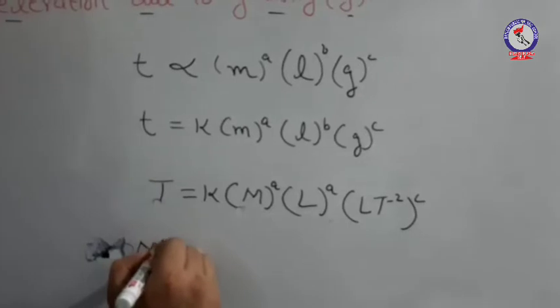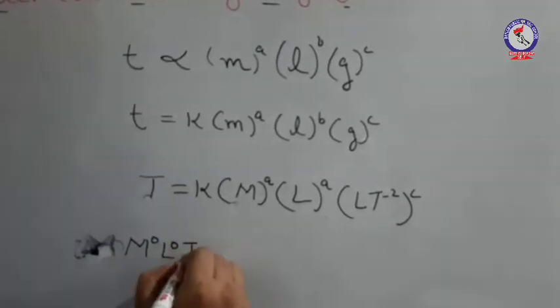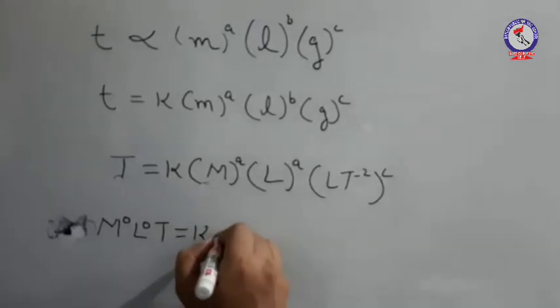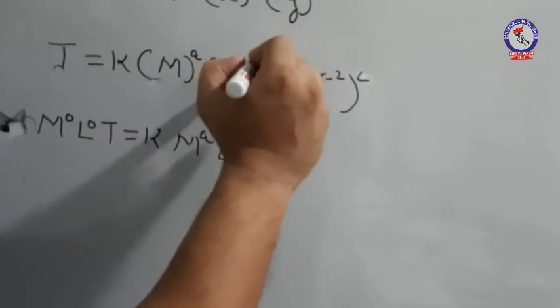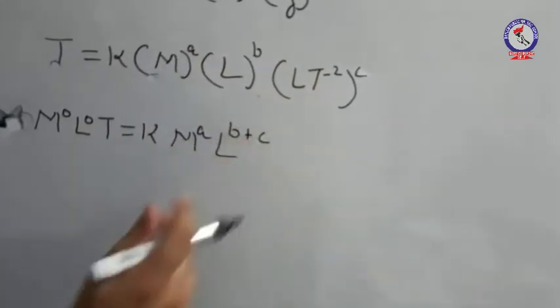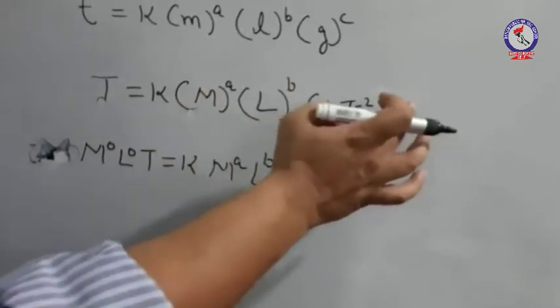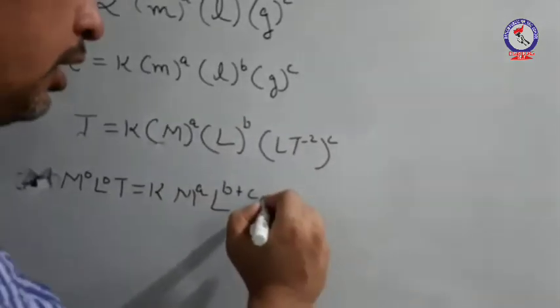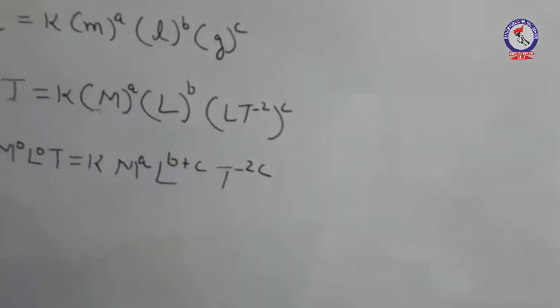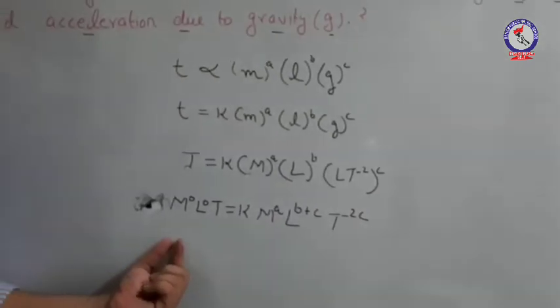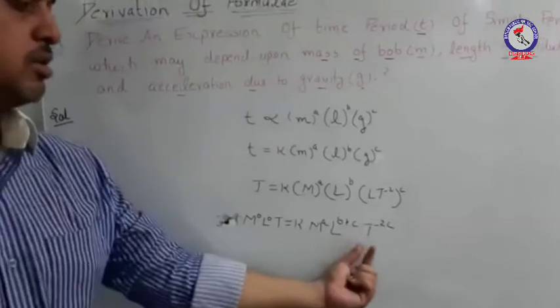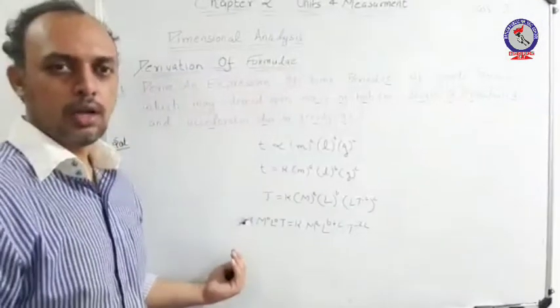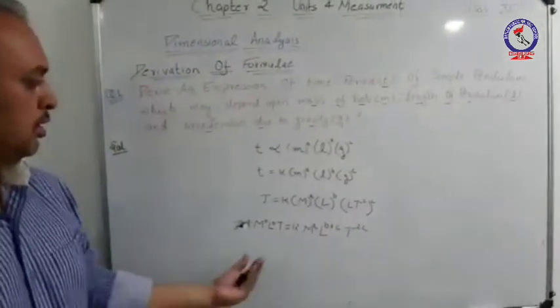Since the LHS has only T, we can write M to the power 0, L to the power 0, T to the power 1 equals K times M to the power A, L to the power B, and G to the power C. Combining the L terms: L to the power B and L to the power C from G together give L to the power B plus C, and the time dimension gives T to the power minus 2C.